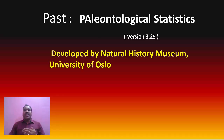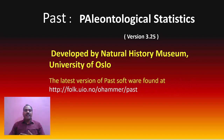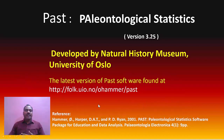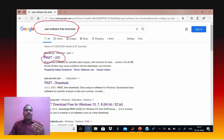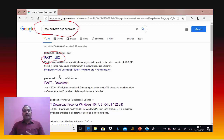PAST is developed by the Natural History Museum, University of Oslo, and it is free software. The latest version can be found at the provided link, which you can use to download PAST. You can also cite it in your publications. Alternatively, you can search 'PAST software free download' in Google, download it, and install it on your computer for different types of analysis.